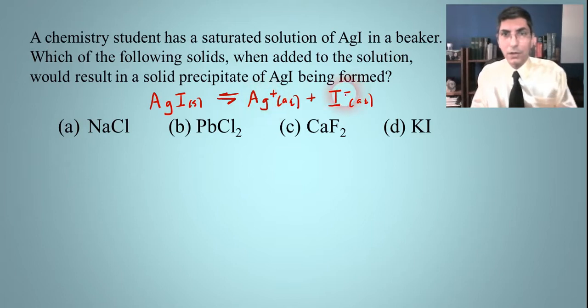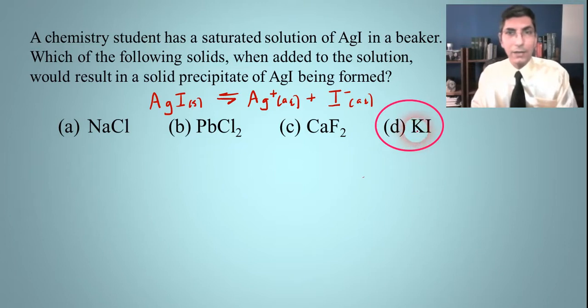Now there aren't any of these four that have silver ions, so the silver is not going to be a factor here. But the iodide—there is one of these that does have iodide, and hopefully it jumps out at you at this point, right? It's choice D. And so by adding that potassium iodide, you're adding iodide ions, and it's going to shift that equilibrium to go back to the left and produce that silver iodide precipitate.